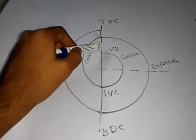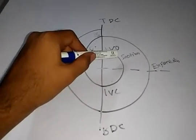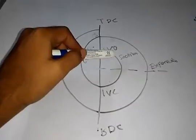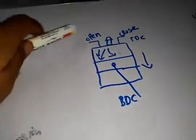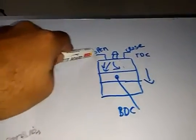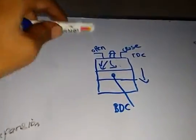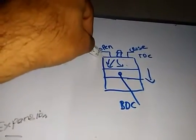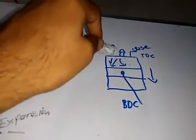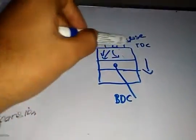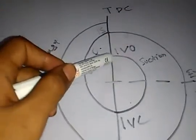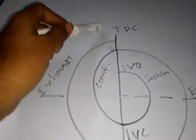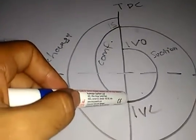From that point the suction process happens. In the suction process the inlet valve opens, as we can see in the diagram — here the inlet valve is in open condition. The air-fuel mixture, that is air from the atmosphere mixed with fuel in the carburetor, is sent through this valve and gets into the cylinder. At that time the piston goes down from TDC to BDC, which is why in this diagram we have drawn the circle from top to bottom.